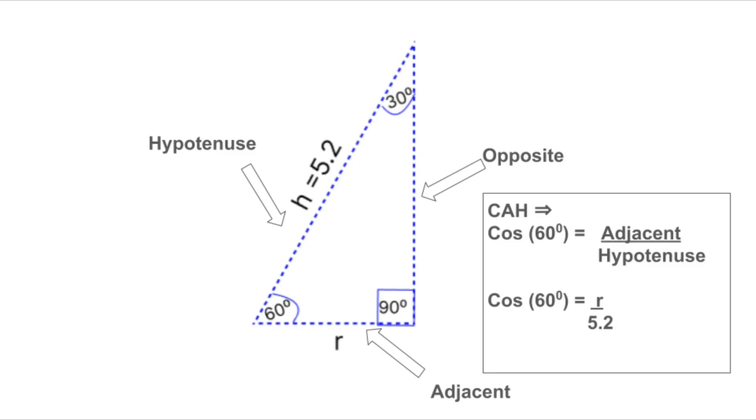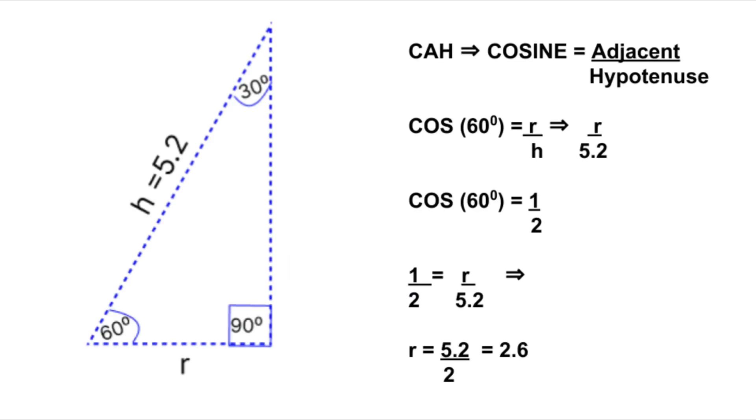Continuing the math. So let's write it out. The cosine of 60 degrees is equal to one-half. Now plug that into our equation. One-half is equal to R divided by 5.2. Now solve for R by multiplying both sides by 5.2. R is equal to 5.2 divided by 2. R is equal to 2.6 units. And there it is. That's our radius.